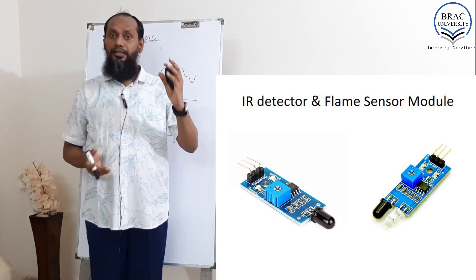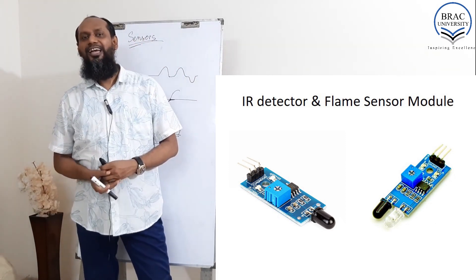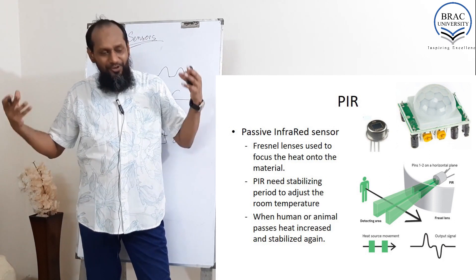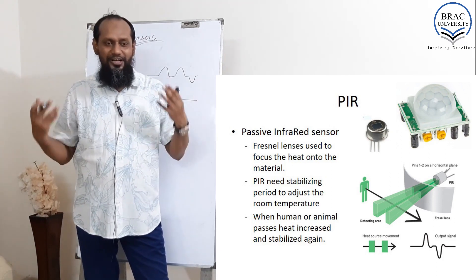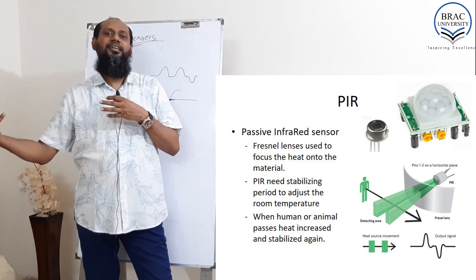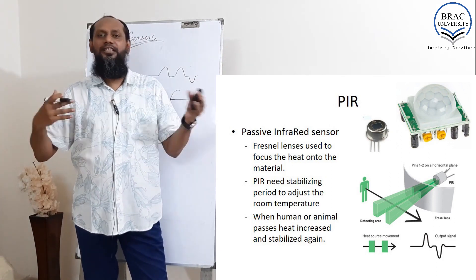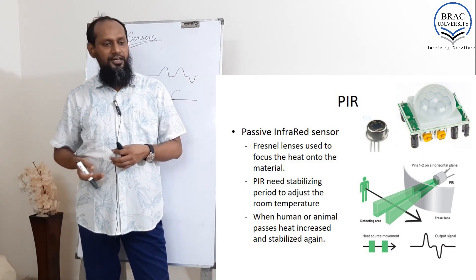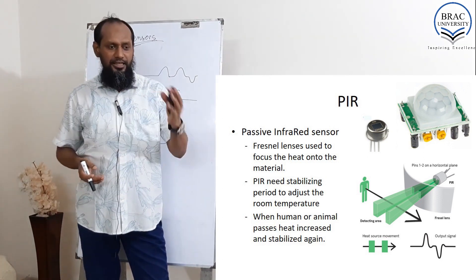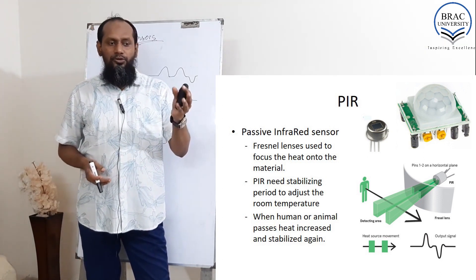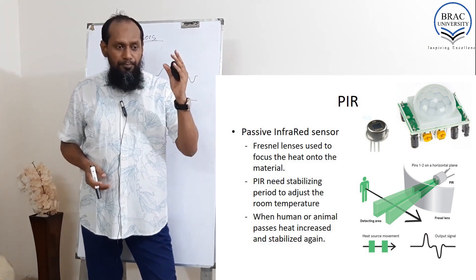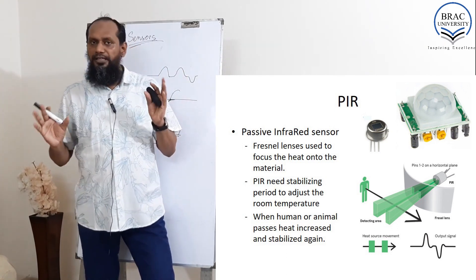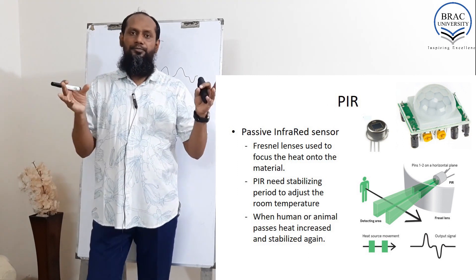The PIR is another very interesting sensor. It is commonly used to identify whether there is a human being, an animal, or not. PIR stands for passive infrared sensor. Passive means it is not emitting anything — the infrared is coming from the environment.